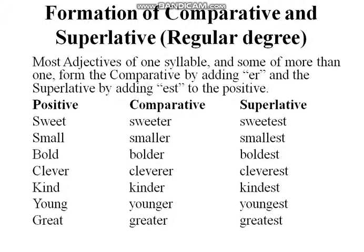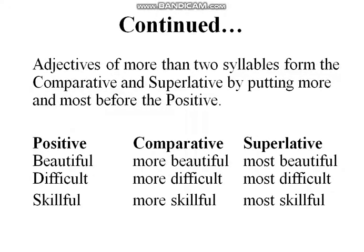For adjectives of more than two syllables, we form the comparative and superlative by putting 'more' and 'most' before the positive. For example: 'beautiful', 'more beautiful', 'most beautiful' — it is a two-syllable word. 'Difficult', 'more difficult', 'most difficult'. 'Skillful', 'more skillful', 'most skillful'. This is also a regular degree because the positive is repeated in comparative and superlative.